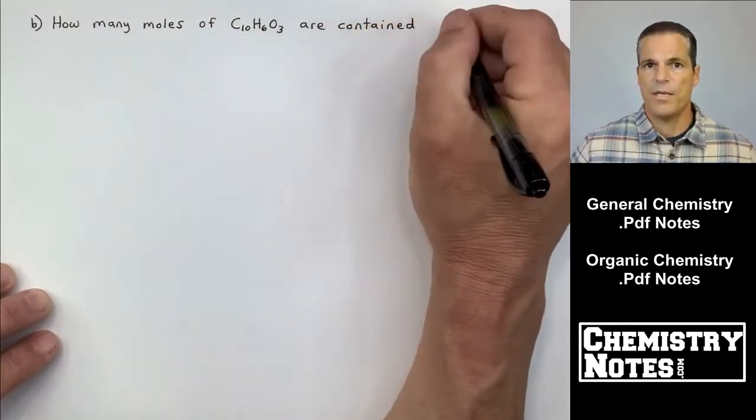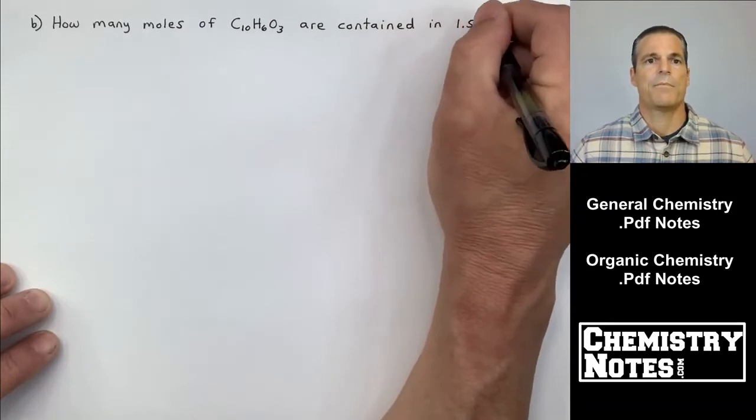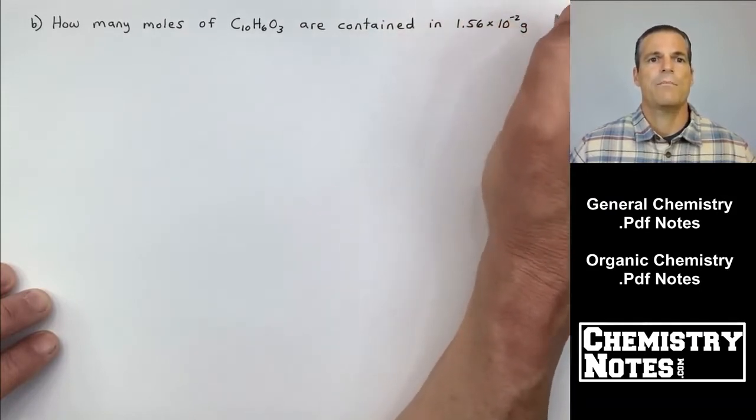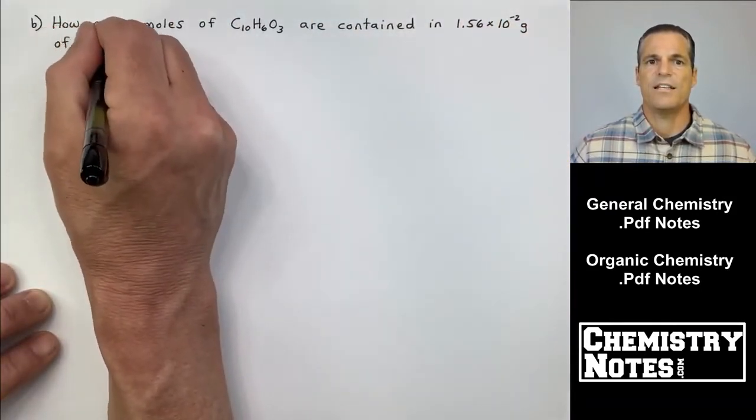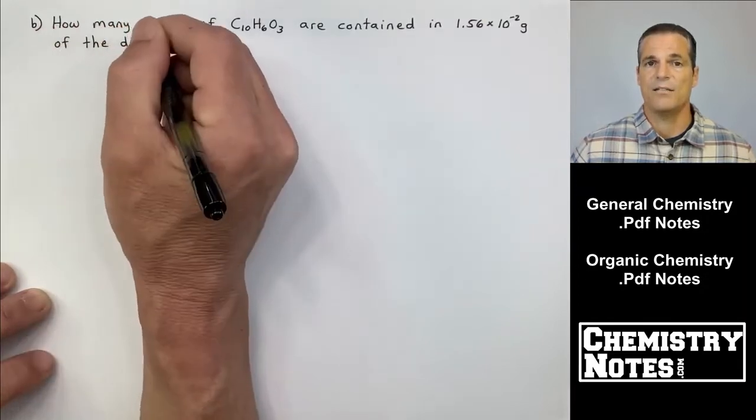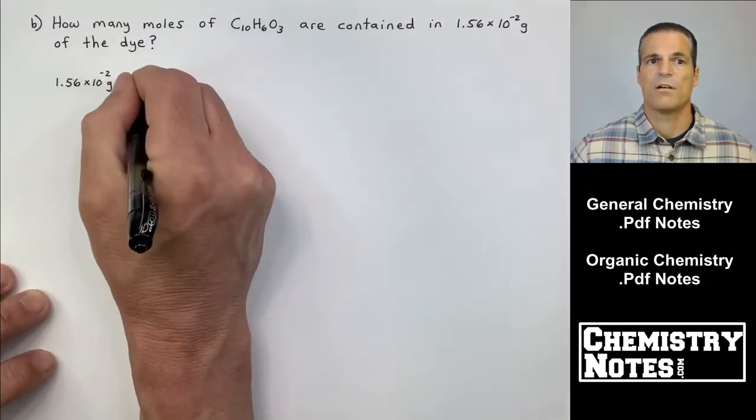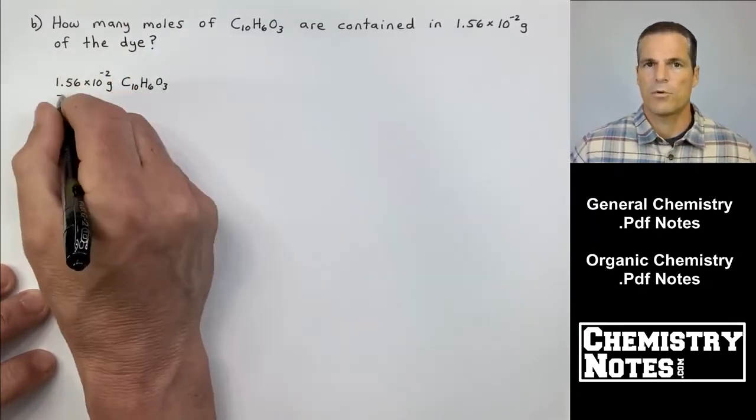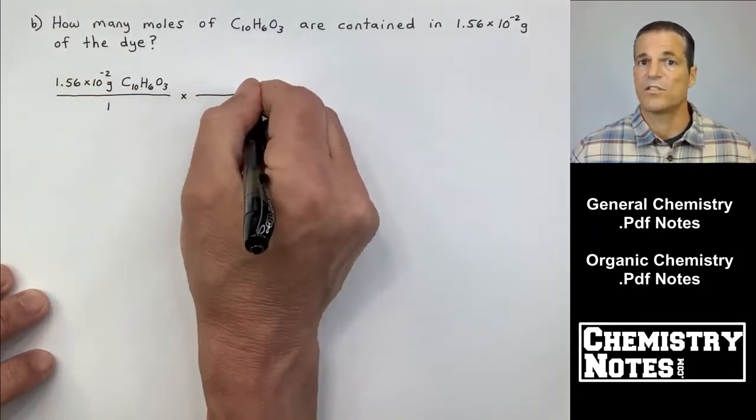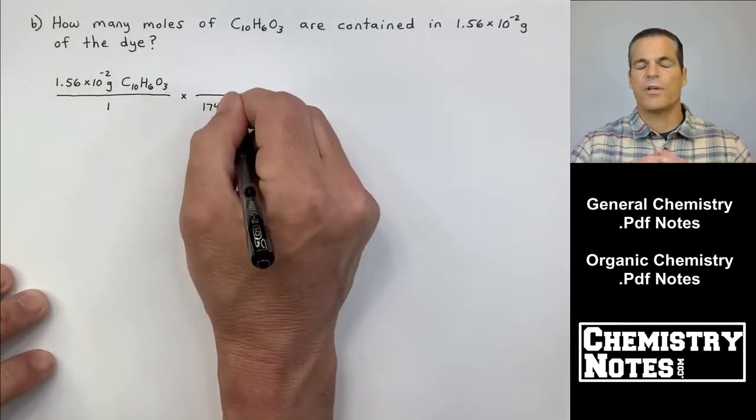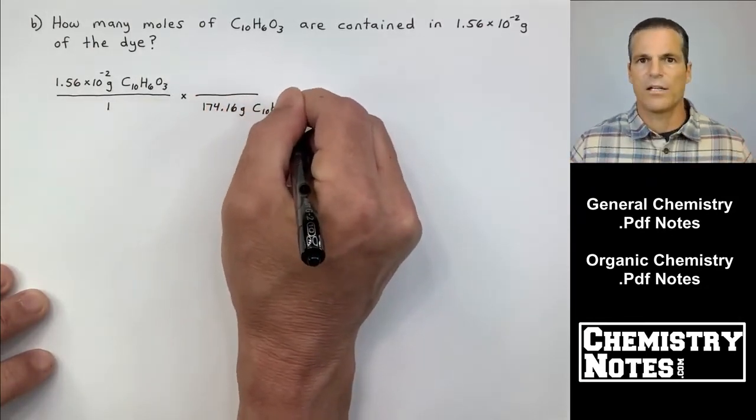All right, here is part B of that same sample problem. Top of page two. How many moles of C10H6O3 are contained in 1.56 times 10 to the minus 2 grams of the dye? Start with what you're given, put it over one. This is stoichiometry again, right? We use stoichiometry all day long in this course.